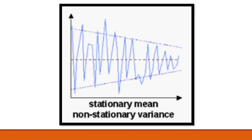Now see this diagram. Here you will see that the mean line is the same — whatever mean exists at the zero time period, the same mean is there at later time periods. So there is a constant mean. But the variance — the change at the starting time period is more, and the change at later time periods is less. So the variance is not constant; it is changing. It is more at earlier time periods and as the time period increases, it starts decreasing. So the variance is not constant, but the mean is constant — this is a stationary mean and a non-stationary variance.